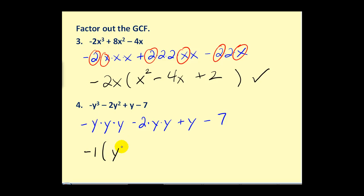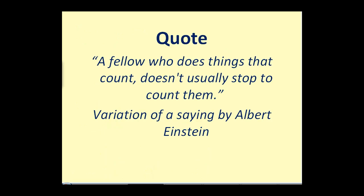So, we'd have a positive y cubed plus 2y squared minus y plus 7. And, normally, we will not leave this negative 1 here. We just rewrite this as negative y cubed plus 2y squared minus y plus 7. I hope you found this video helpful for identifying and factoring out the greatest common factor of a polynomial. Thank you for watching.